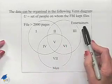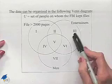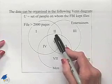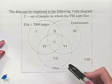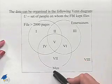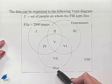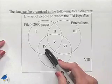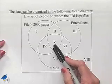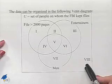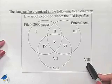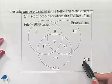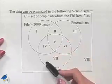We have entertainers, that would be in regions one, two, three, five, and six, and we have the set of men in regions four, five, six, and seven. Region eight would be the region which doesn't include anything in these three sets.